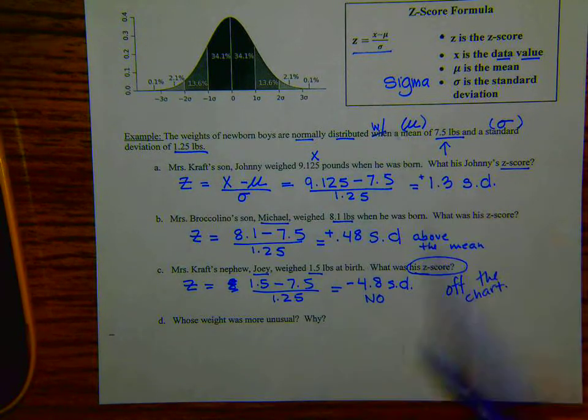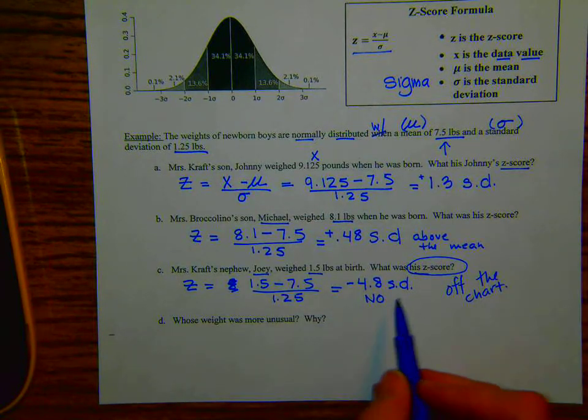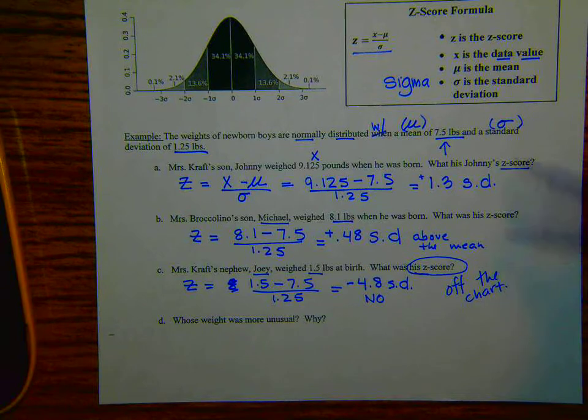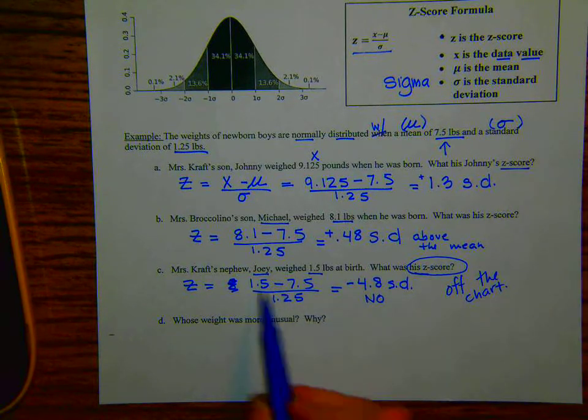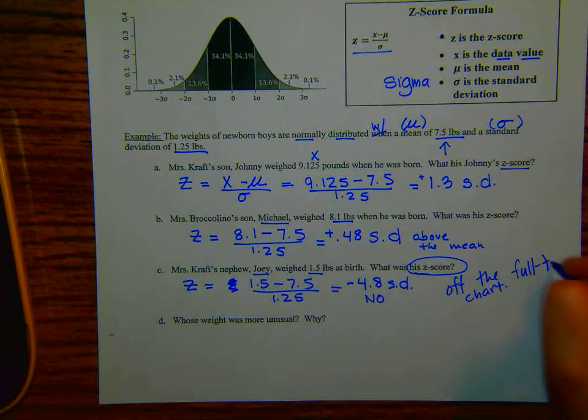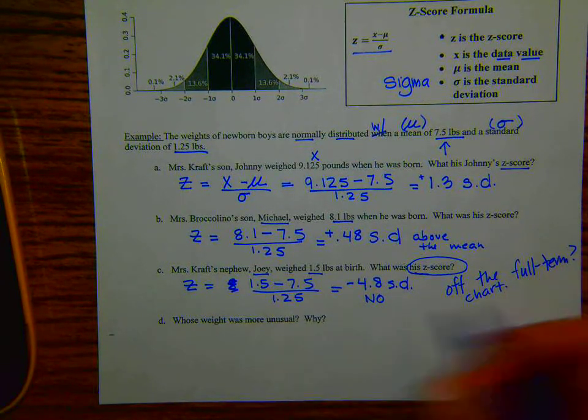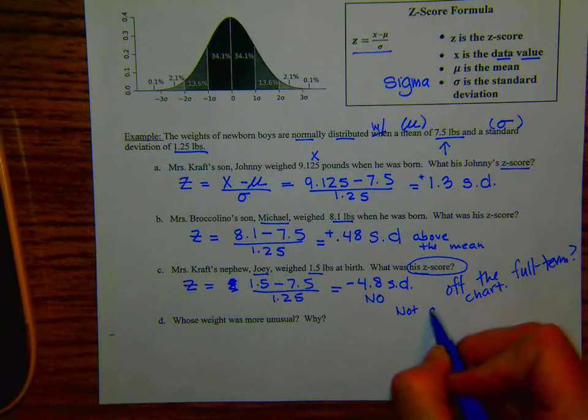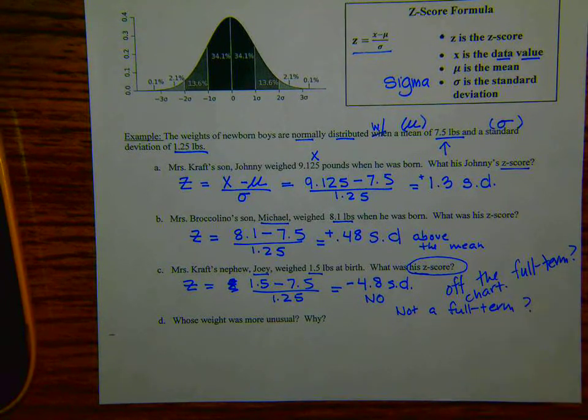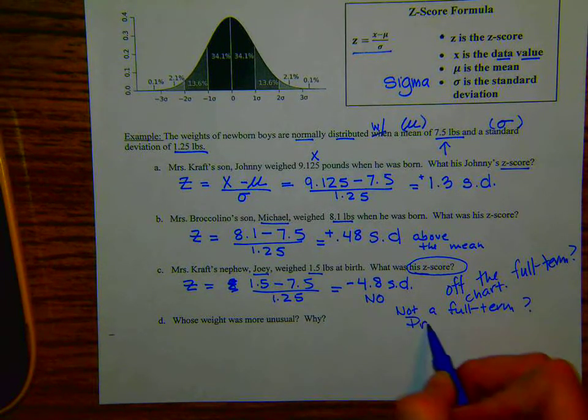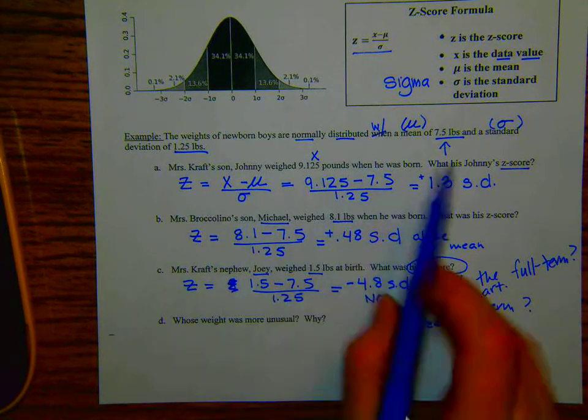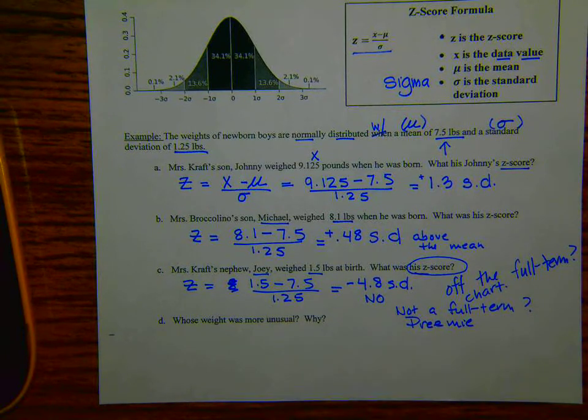This data does not include babies who, what we might consider is that these two babies were full-term babies. And what about this baby? Did this baby go to full-term? Well, in fact, this was not a full-term baby. So he was, in fact, a preemie baby. And he is not on this chart of babies with a standard deviation of 1.25.